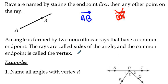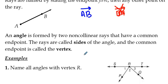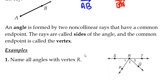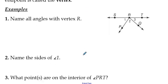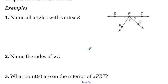An angle is formed by two non-collinear rays that have a common endpoint. The rays are called the sides of the angle and the common endpoint is called the vertex of that angle. So a couple of examples here. Let's name all the angles that have a vertex at R. Well, right off the bat, we have angle 1, 2, and 3.